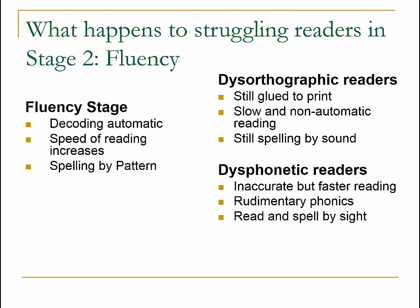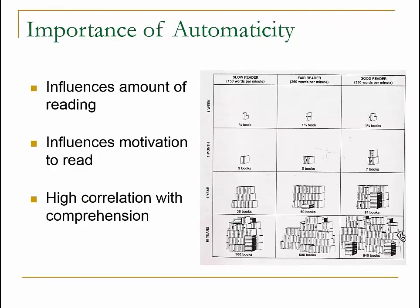Let's spend a little bit of time talking about why automaticity or fluency of reading is so important. The ability to read quickly, as depicted by this schematic that shows a slow college reader, a fair college reader, and a good college reader, and how much they can consume in reading in a week, a month, a year, and ten years, really tells the story of the lack of knowledge that kids will have if they continue to be slow readers.